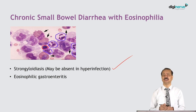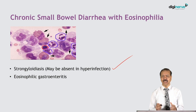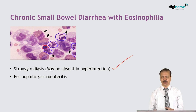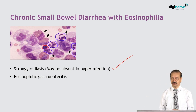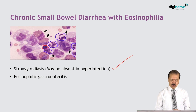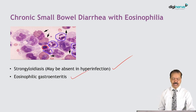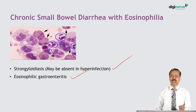In some patients with hyperinfection due to Strongyloides, the eosinophilic response may not be present. Eosinophilia tries to contain the parasites in the gut, and absence of eosinophilia may be associated with more severe and disseminated disease. The second condition where small bowel diarrhea may be associated with eosinophilia is eosinophilic gastroenteritis.